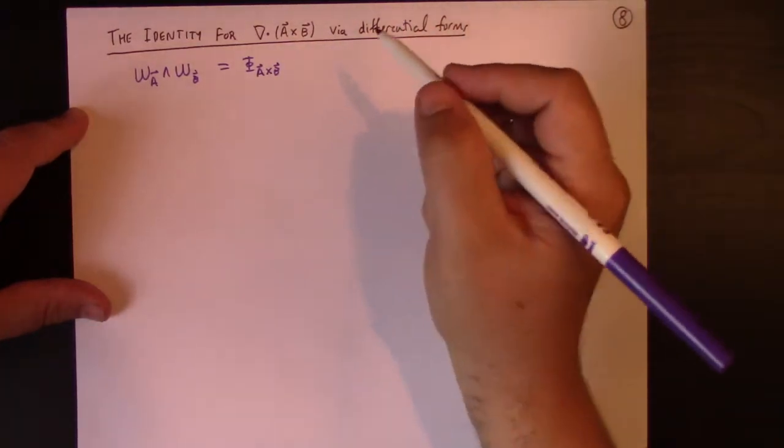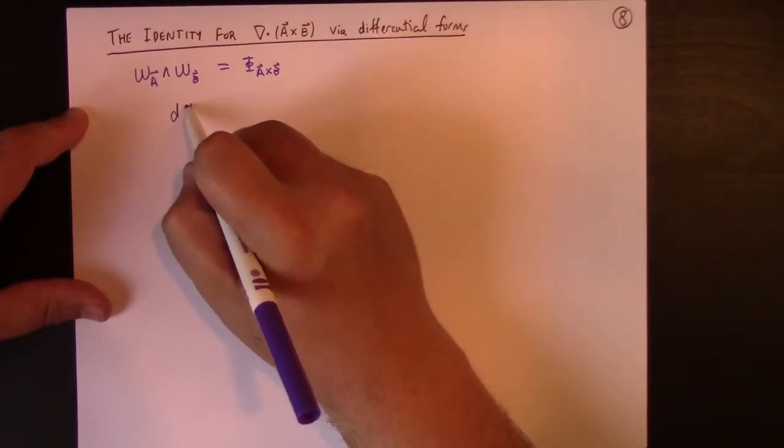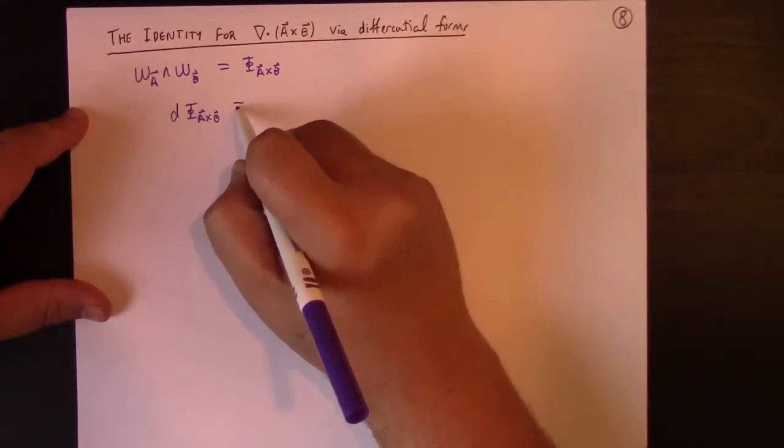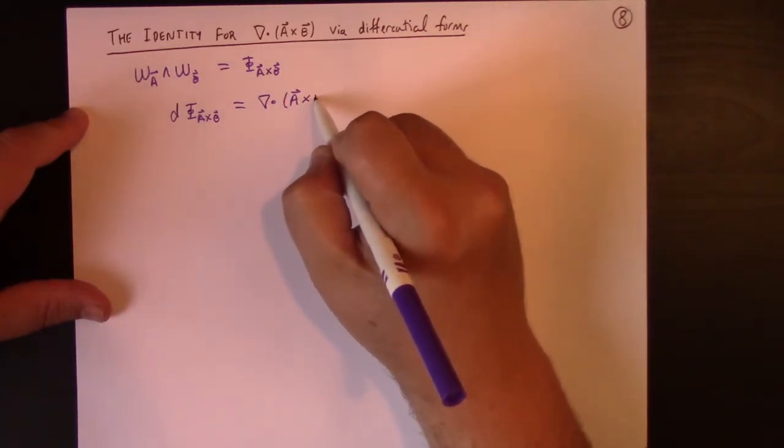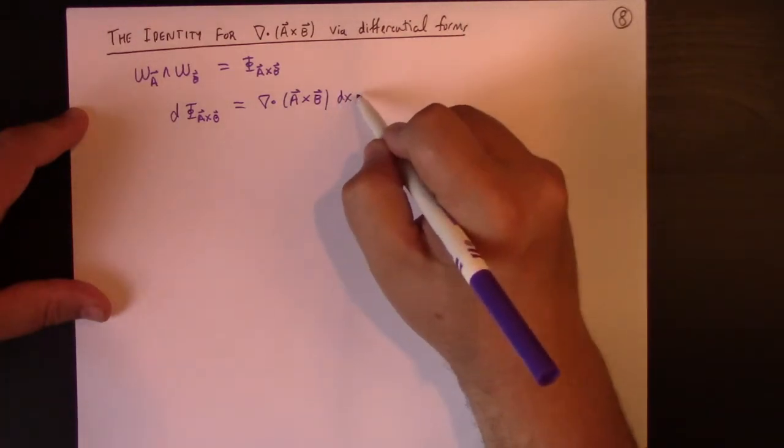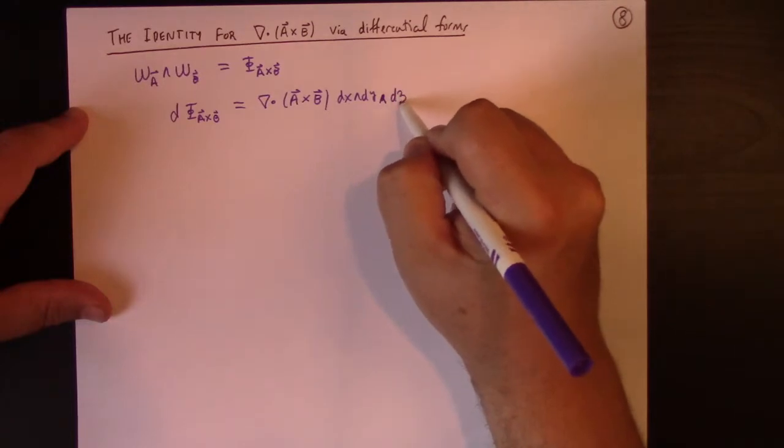All right, so on the other hand, I know if I take the exterior derivative of the flux form of A cross B, I get the divergence of the cross product of these two vector fields A and B with the top form dx wedge dy wedge dz, right?